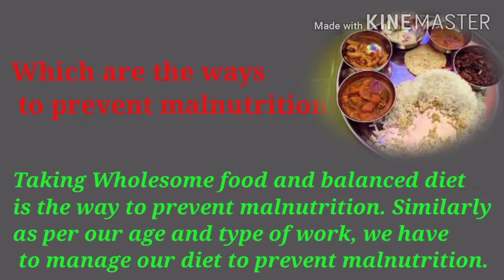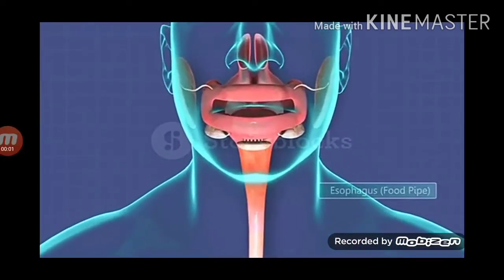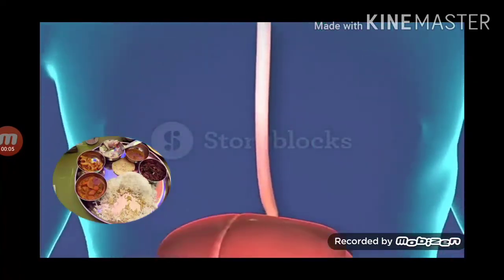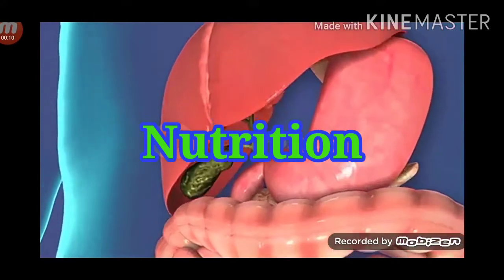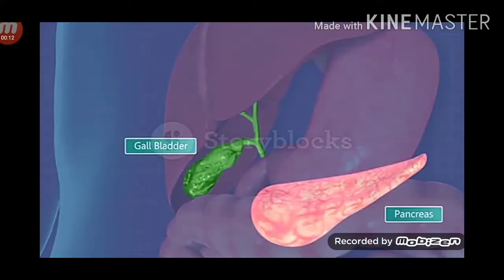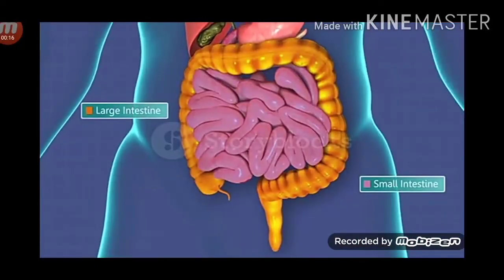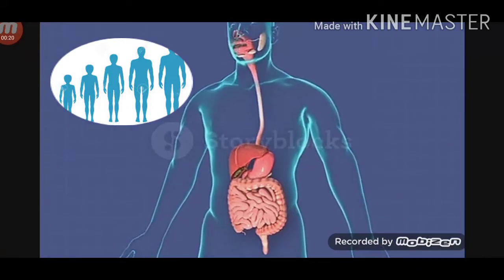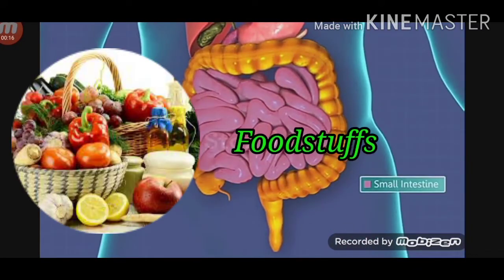As per our age and type of work, we have to manage our diet to prevent malnutrition. Nutrition is the process of taking in and using food, which takes place in living organisms. Some life processes go on continuously in living organisms. Substances which are digested and assimilated for obtaining energy and for the growth and health of our body are called foodstuffs.